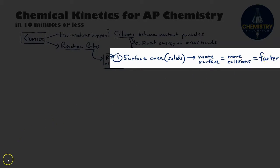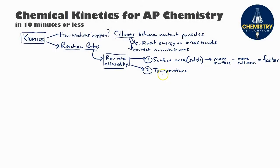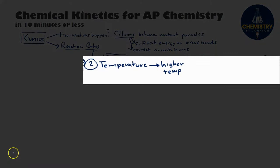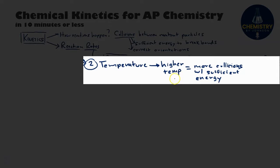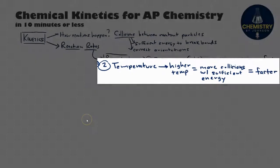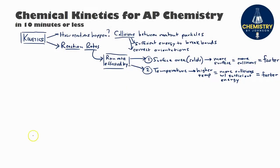A second factor to consider is the temperature of the reactants. If your reactants are at a higher temperature, the particles are moving more quickly and with more kinetic energy. This means not only will there be more collisions between particles, but a higher percentage of those collisions will have sufficient energy to start breaking bonds between the reactants, leading to a faster reaction rate.